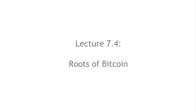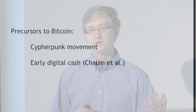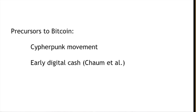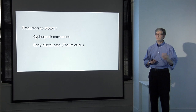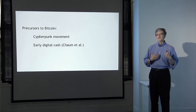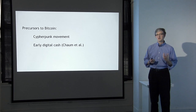In lecture 7.4, we'll talk about the roots of Bitcoin — how it got started, what were the precursors to it, and the mysterious founder of Bitcoin. There were really two precursors worth talking about. First, Bitcoin arose out of the cypherpunk movement, which brought together two trends: libertarianism — the idea that society would be better off with either no government or a very minimal government — and the idea of strong cryptography and public key cryptography, which started in the late 1970s.